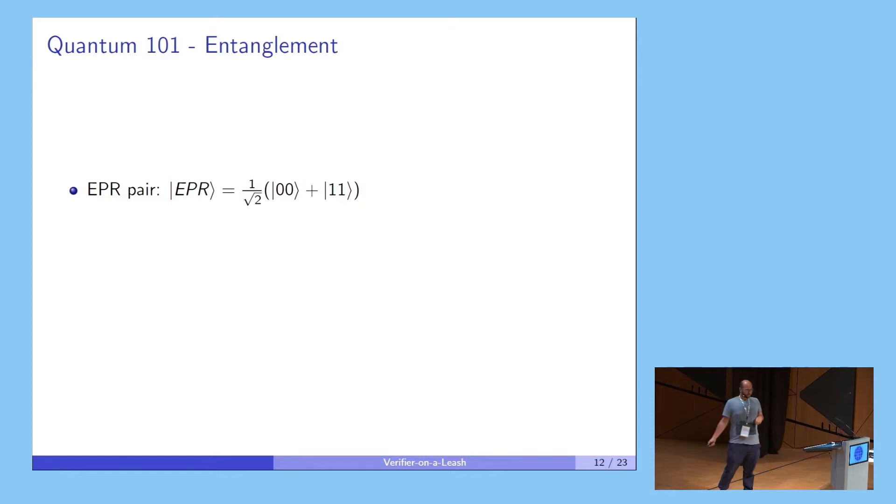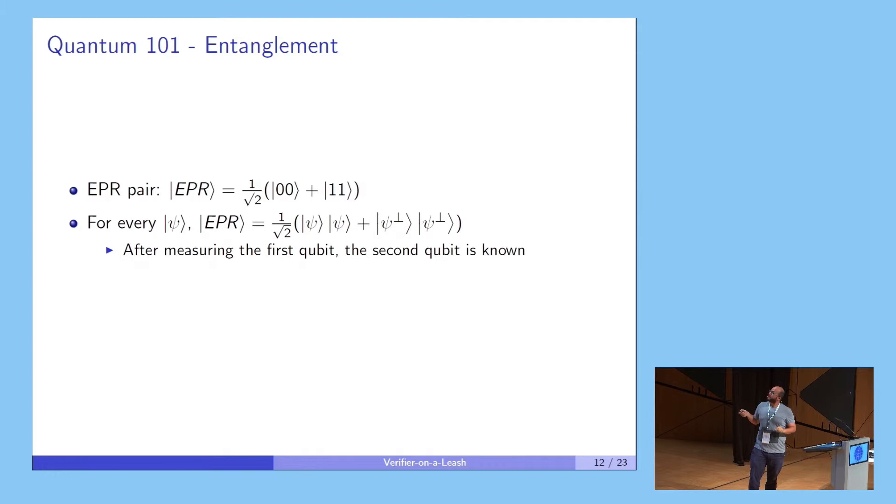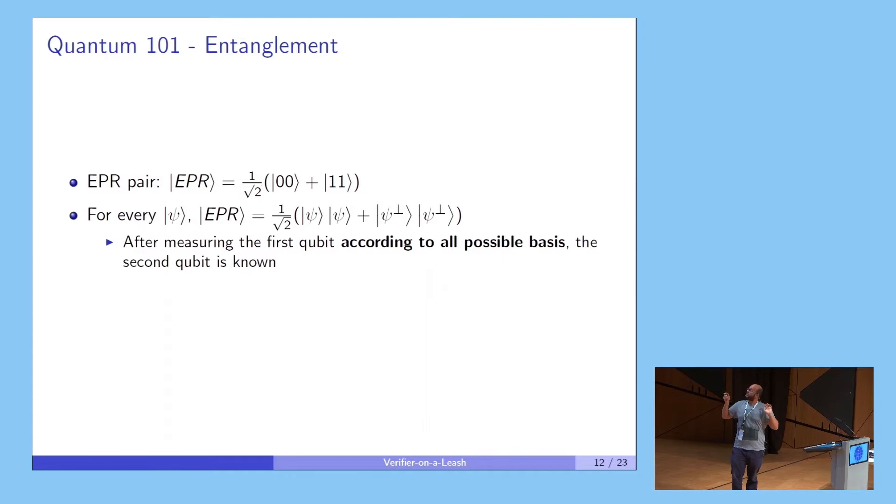Another important concept in this talk would be entanglement. An EPR pair is called this two-qubit state |00⟩ + |11⟩. The important thing about this state is that it cannot be written as a product of two states. Somehow this state can only be seen as a whole, as a whole state, and not as two parts. In particular, for every one-qubit state psi, this EPR pair can be written as |ψ⟩|ψ⟩ + |ψ⊥⟩|ψ⊥⟩. And in particular, if you measure the first qubit on any basis, then you know what's the measured state, what's the post-measured state on the second part as well. So this allows us, in this two-prover setting, to somehow steer what's the state on the other prover for any basis.